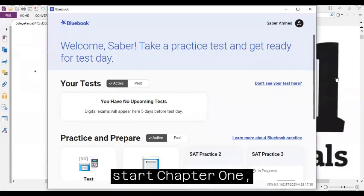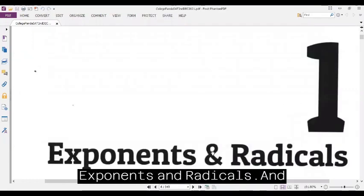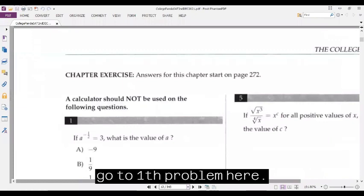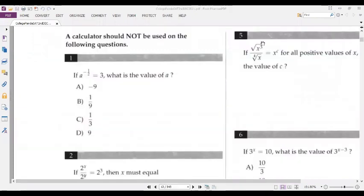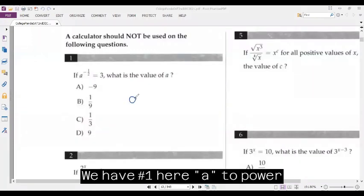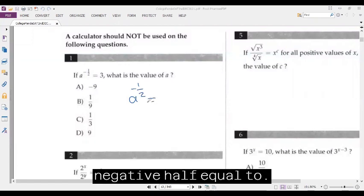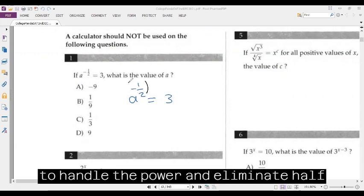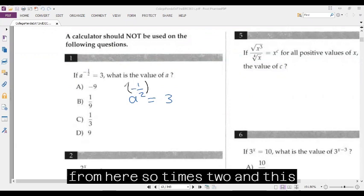Let's start chapter one, exponents and radicals, and go to the first problem here. We have number one here: A to the power negative half equals three. So we have to handle the power and eliminate the half from here.